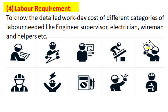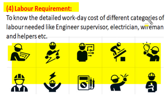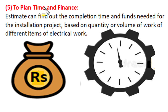To execute any electrical installation, we need manpower. Different types of labor and officials are required — including electrical designer, planner, supervisor, electrician, wireman, and helpers. A team is formed of different categories of people needed for electrical installation, and required workdays are calculated to find out the cost of the labor component in the electrical installation.